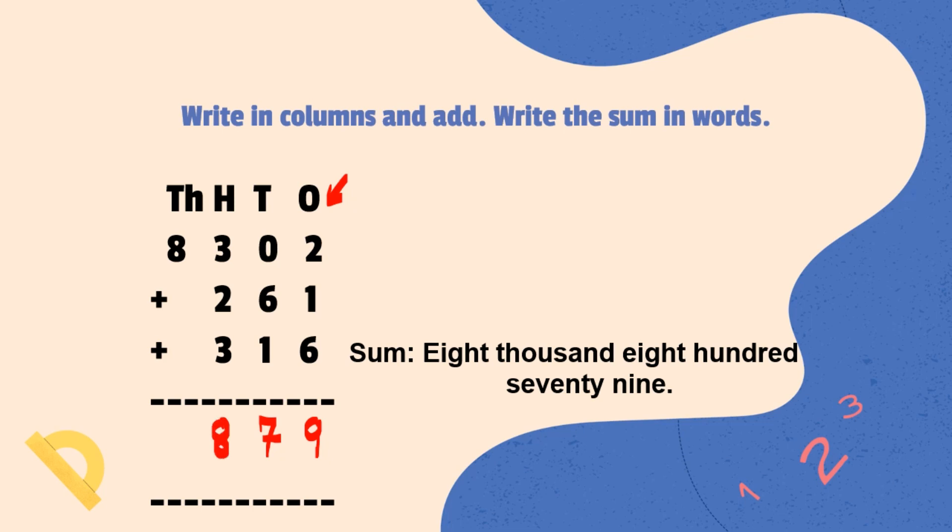Adding 1000's place, we have only 8 here. So, we write it as it is. So, the sum of addition will be 8879. We can write this in words like this.